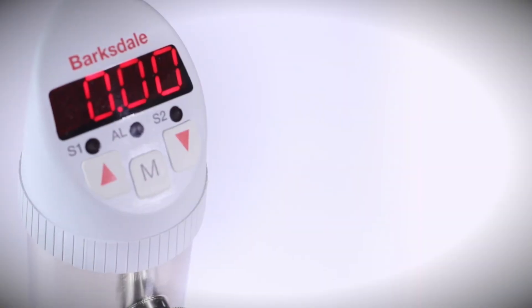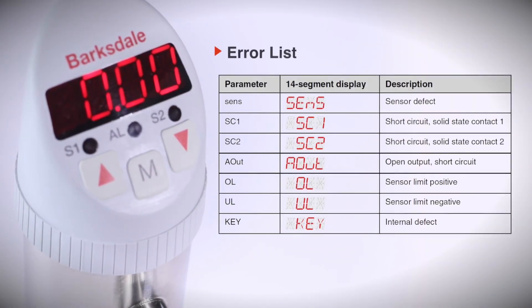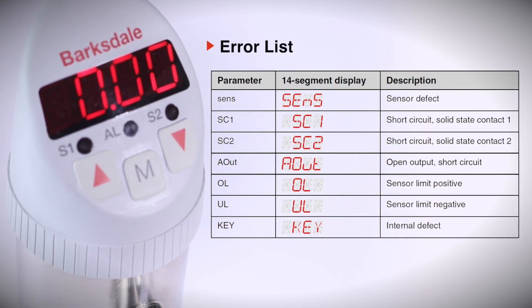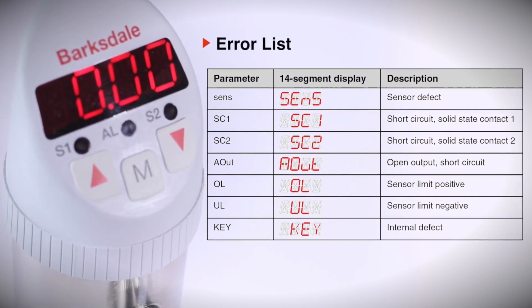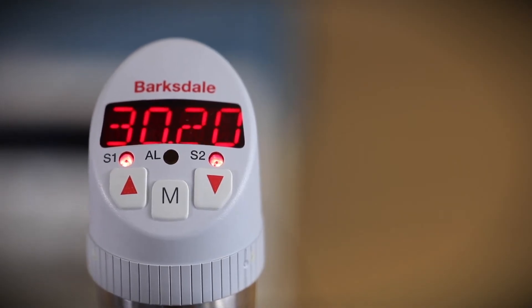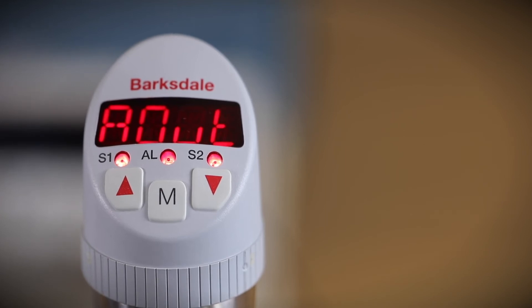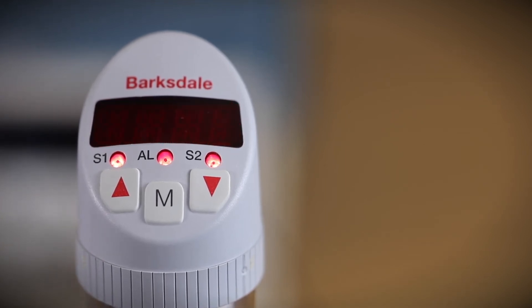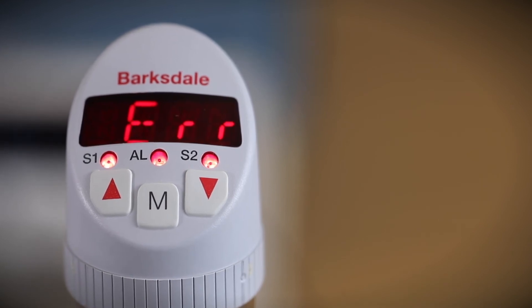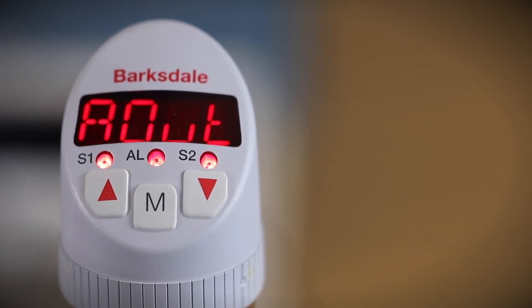BPS 3000 has diagnostic capabilities to detect and display errors like sensor malfunction, short circuit, sensor limits, and more. Let's see a quick example of Aout error. If Aout error is displayed, there might be open output or short circuit. For more details on the error list, please refer to the BPS 3000 manual.